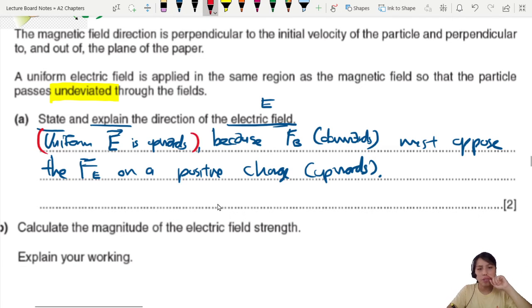Explain why. Because the magnetic force downwards must oppose the electric force upwards. Fe on a positive charge upwards. This is a pretty complete sentence. We first find magnetic force downwards, that means electric force must be upwards, which means electric field must be upwards because this is a positive charge.